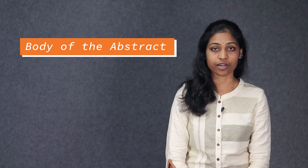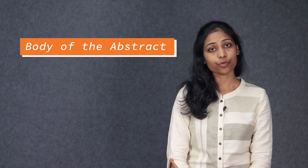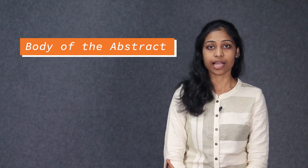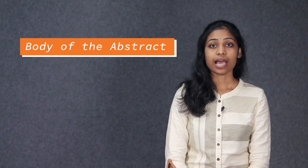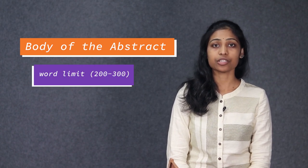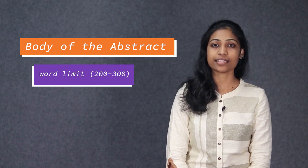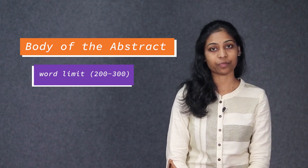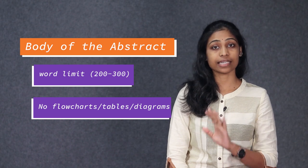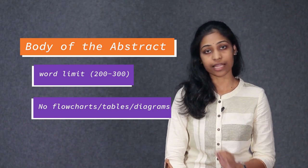Let us now see how the body of the abstract is constructed. Here are a few points to remember while preparing an abstract. Abstracts have word limits usually between 200 to 300. Read the abstract guidelines carefully to know the word limit. An abstract should not contain flowcharts, tables or diagrams.